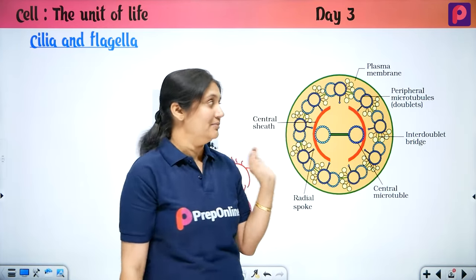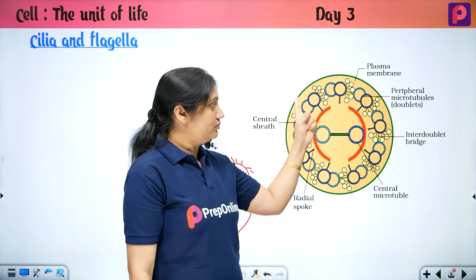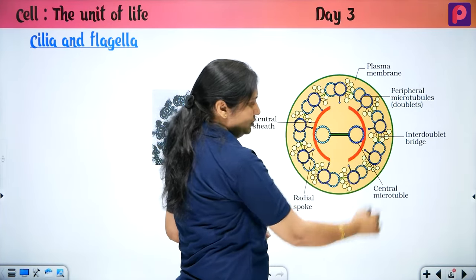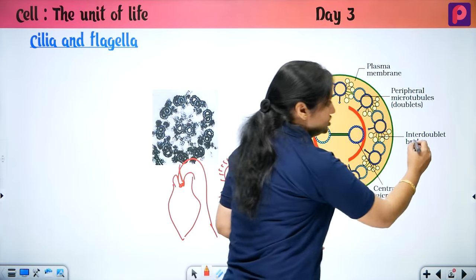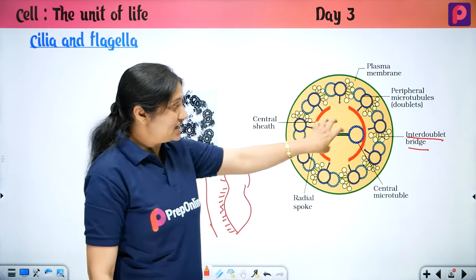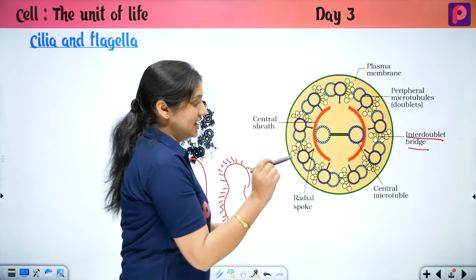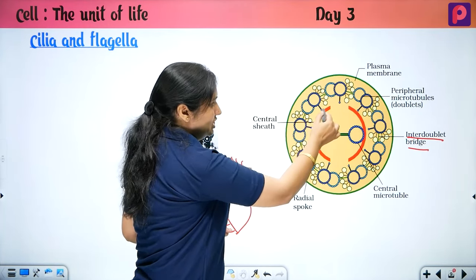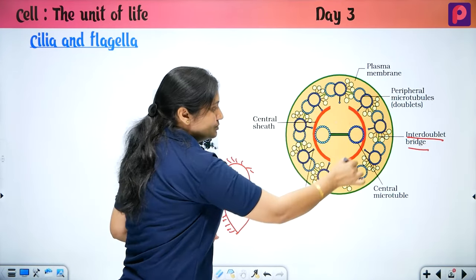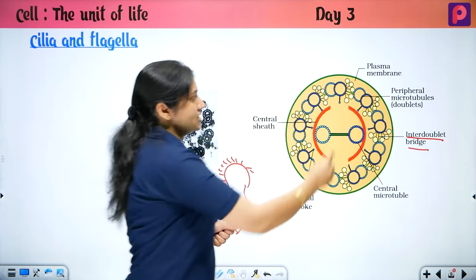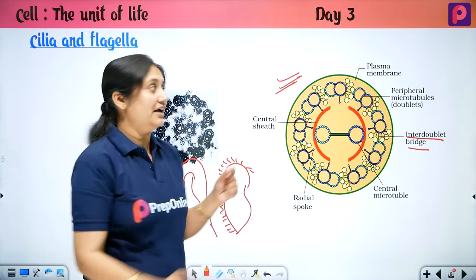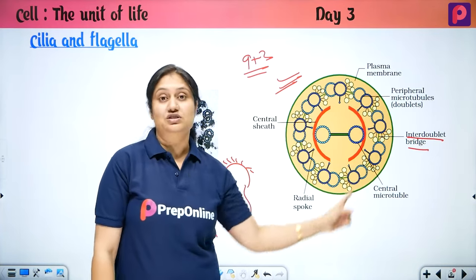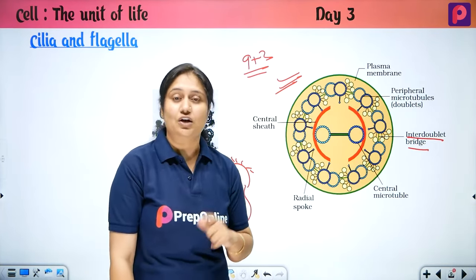In the 9+2 arrangement of cilia and flagella: the peripheral microtubules are in doublet form (9 doublets), and the two central microtubules are single. The inter-doublet bridge connects the doublets. The central pair is connected to the periphery via radial spokes, covered by a central sheath. This 9+2 arrangement is the structure of eukaryotic cilia and flagella, made from microtubules (protofilaments of tubulin protein).